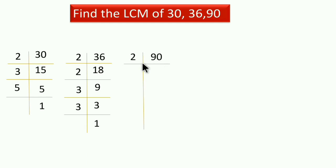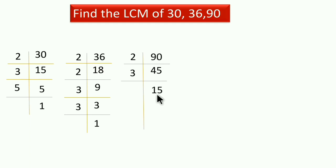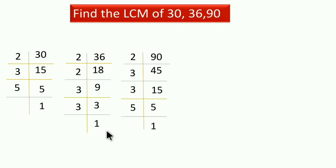90 को 2 से divide करेंगे तो answer है 45। अब 45 को 2 से divide नहीं होता। यहाँ पर divisibility test भी आनी चाहिए - मतलब number देखते ही हमें समझ जाना चाहिए कि उसे 2, 3, या 5 से divide कर सकते हैं। 45 को 3 से divide करेंगे - answer 15। 15 को फिर 3 से divide करेंगे - 5। Last में 5÷5=1। तीनों की ending में 1 आ गया।